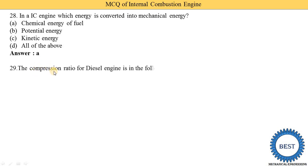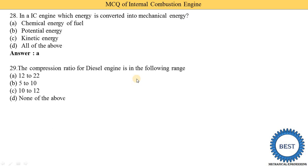Next MCQ: the compression ratio for a diesel engine is in which range? Option A: 12 to 22, option B: 5 to 10, option C: 10 to 12, option D: none of the above. Option A is correct — the compression ratio for a diesel engine is in the range of 12 to 22.